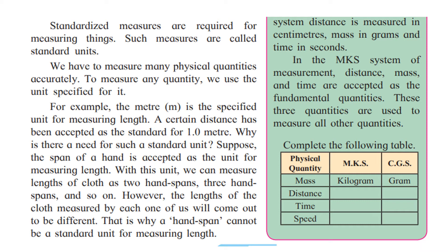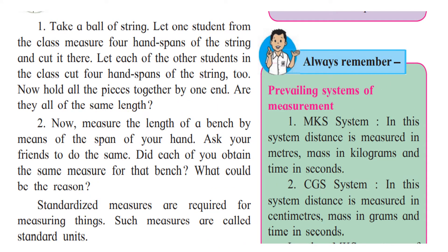Why is there a need for such standard units? We already saw that if we measure with anything else, everybody will have differences, causing chaos and confusion. Suppose a hand span is accepted as a unit for measuring length — we could measure cloth as two hand spans, three hand spans, and so on. However, the length measured by each of us would come out different. That is why a hand span cannot be a standard unit for measuring length — there has to be a specific standard unit for everybody.